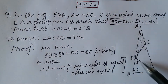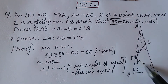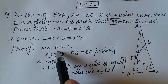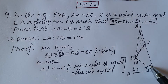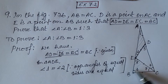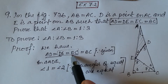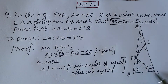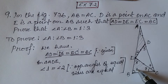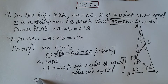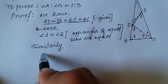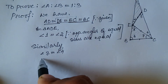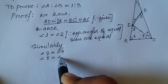Similarly, in triangle DEC, DE is equal to EC, so angle 3 is equal to angle 4. And in triangle EBC, EC is equal to BC, so angle 5 is equal to angle 6.